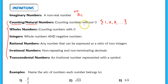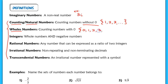So counting numbers without zero. Finally, somebody got smart and said we have to think of something to denote nothing — and they thought of 0. So now we have a whole system of numbers that start with 0: your counting numbers with 0. We call these the whole numbers.